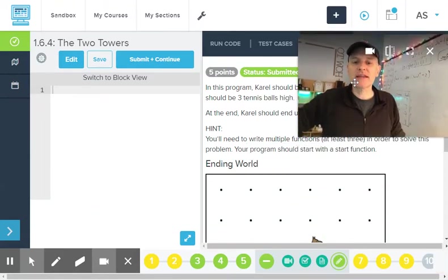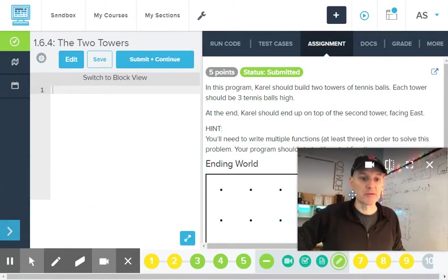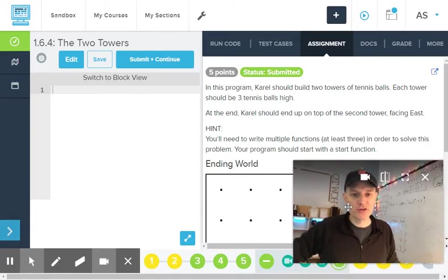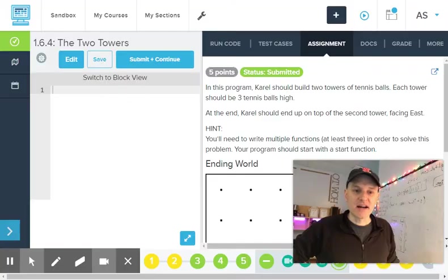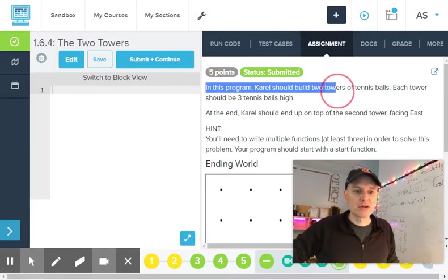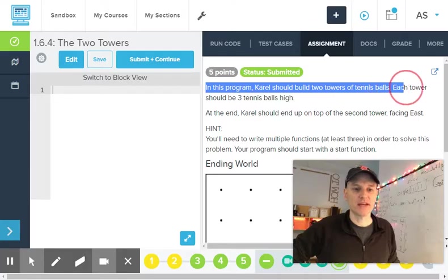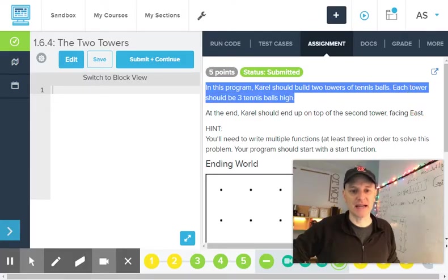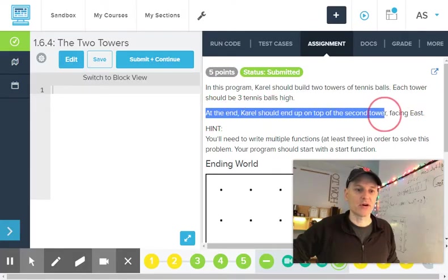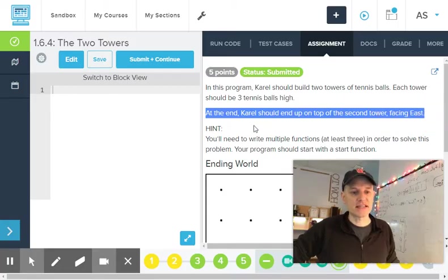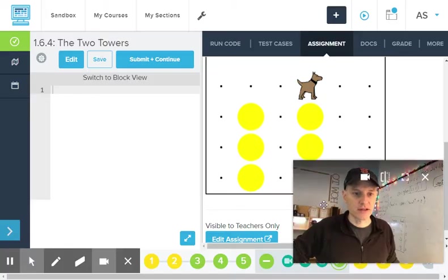Hi. So we're going to look at the two towers problem here, or I'm going to solve it, and you're welcome to look over my shoulder while I do that. So here's the problem definition in this program. Carroll should build two towers of tennis balls. Each tower should be three tennis balls high. At the end, Carroll should end up on top of the second tower facing east. And then here's a picture of what that world should look like.